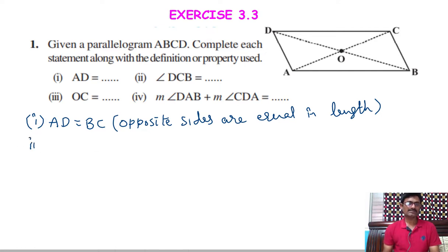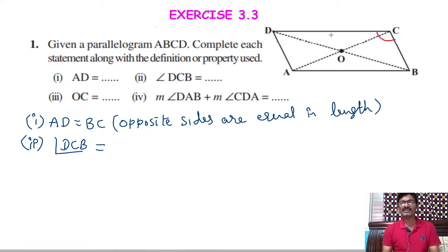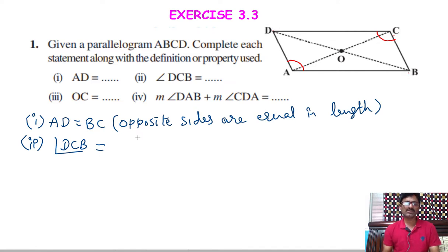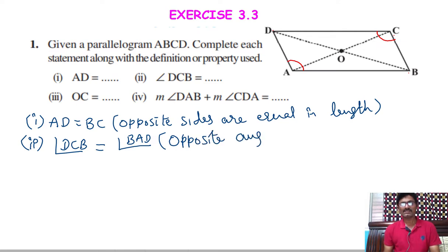Next, second one. Angle DCB — where is angle DCB? You see there in the diagram. DCB is this angle. In a parallelogram, opposite angles are equal. So for angle C, the opposite angle is angle A. So angle C and angle A are equal. So angle DCB is equal to angle BAD. The reason is opposite angles are equal.